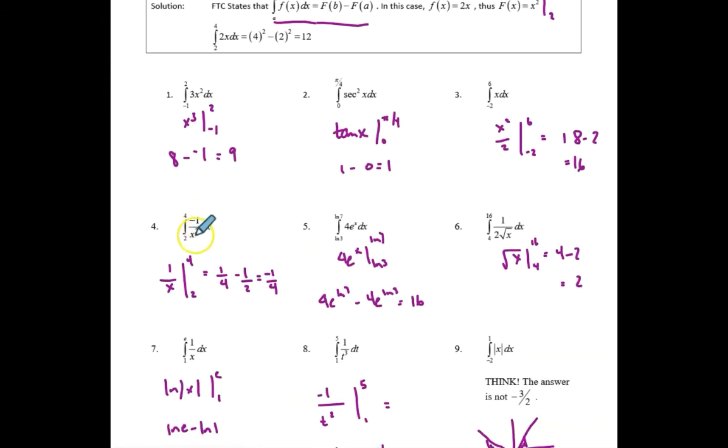Negative 1 over x squared integrates to positive 1 over x. And then I'm going to evaluate that first at 4, and then at 2. So I have 1 fourth minus 1 half, which is negative 1 fourth.